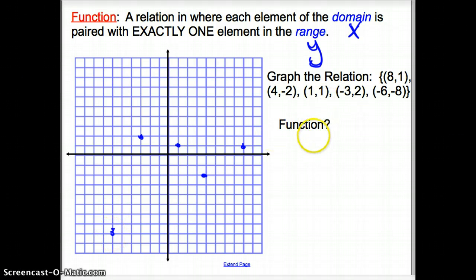Now, I ask the question, is this a function? Well, a function is, again, a relation in which each element of the domain is paired with exactly one element in the range. So, we have only one y for each x. So is there more than one y value for each x? No, there is not. There is only one y for each x. So, yes, this is a function.